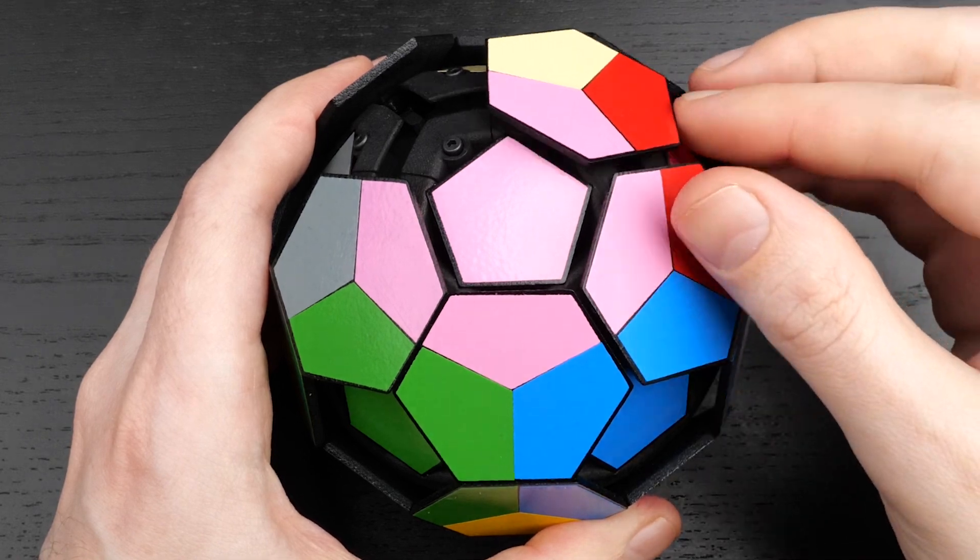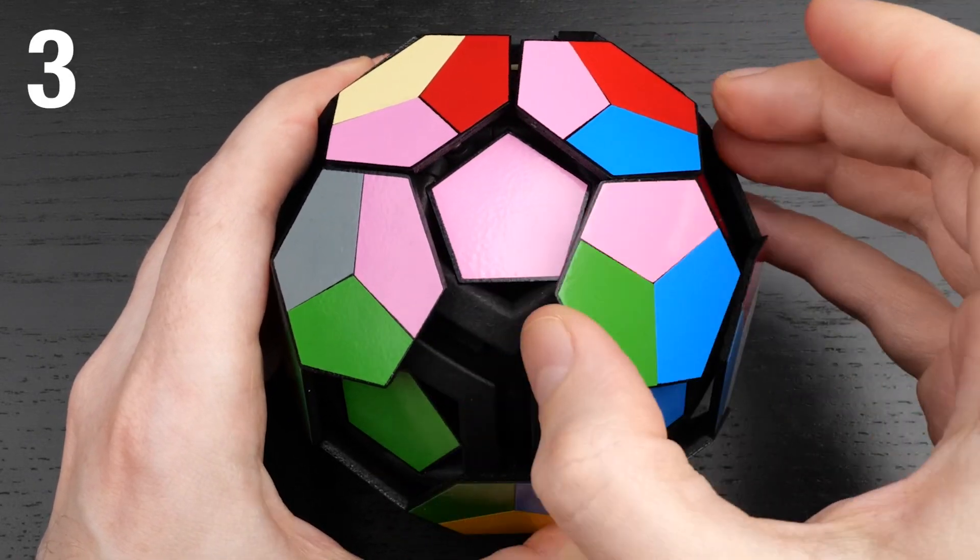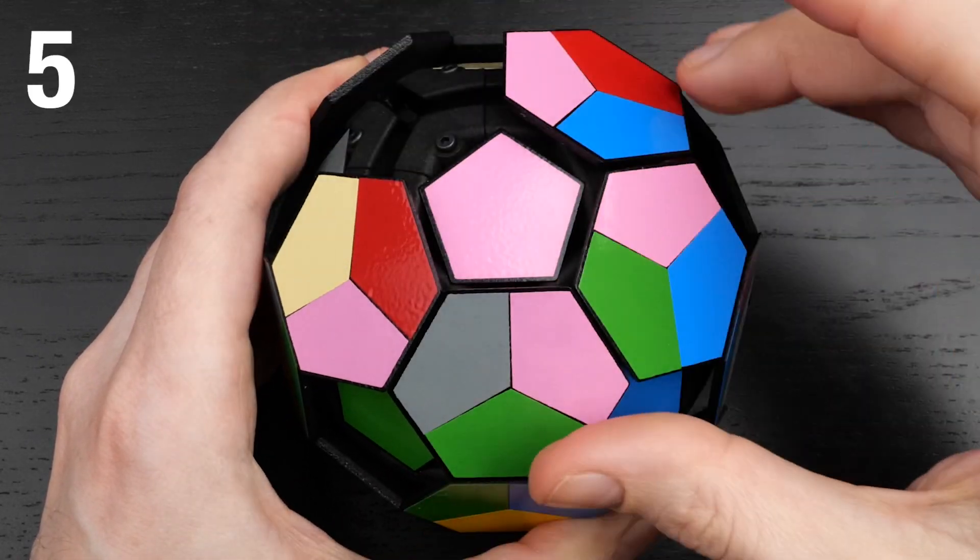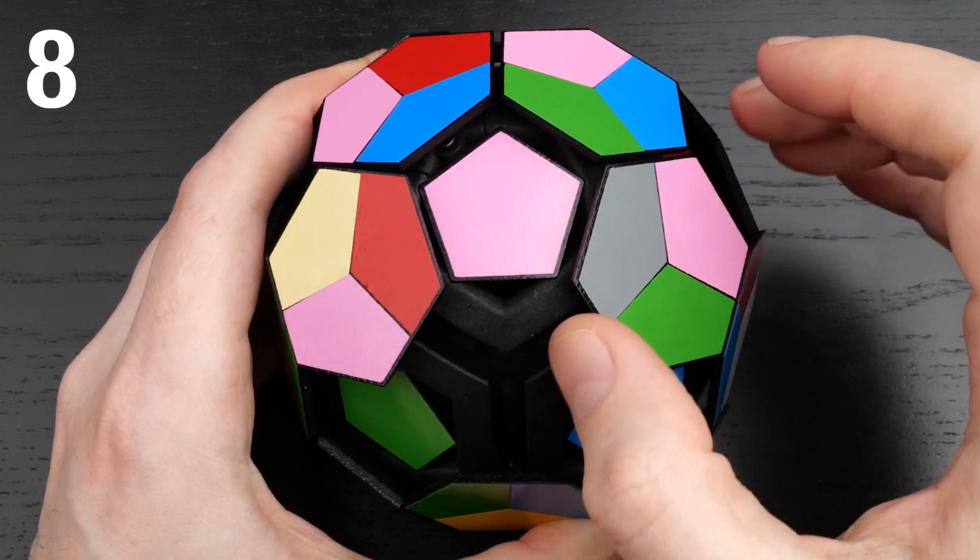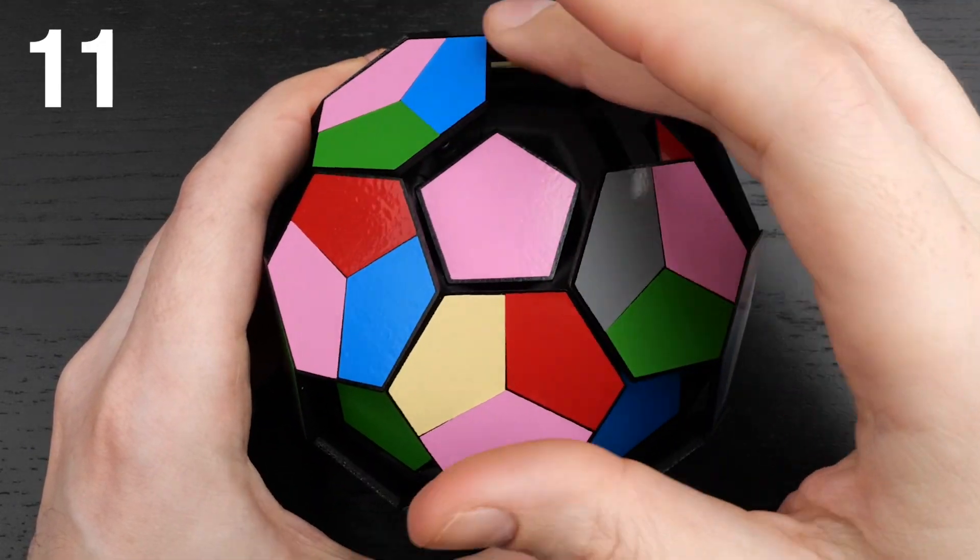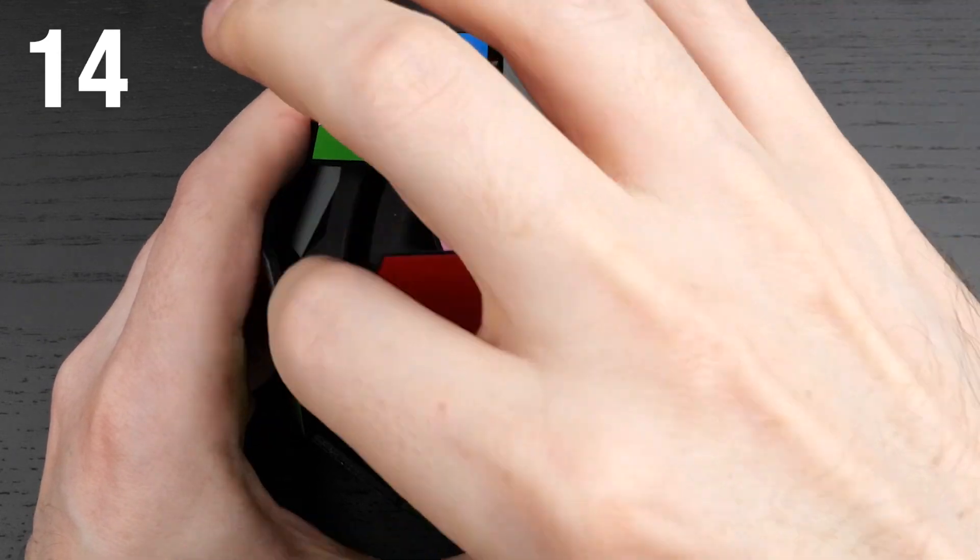You can do the same thing with four tiles and the gap around one of the pentagons here in the Continental Drift Puzzle. Each of the four tiles needs to move five times to go around, and so we should be back to the start after 20 moves. Let's see what happens.